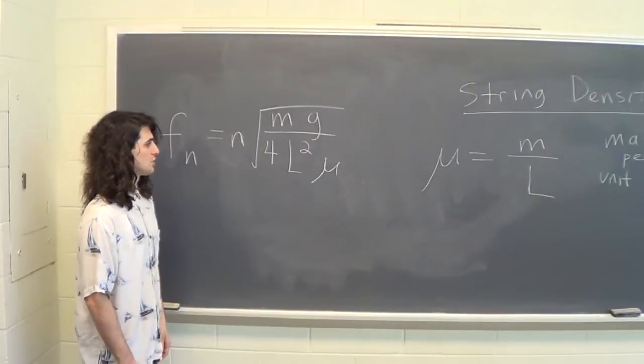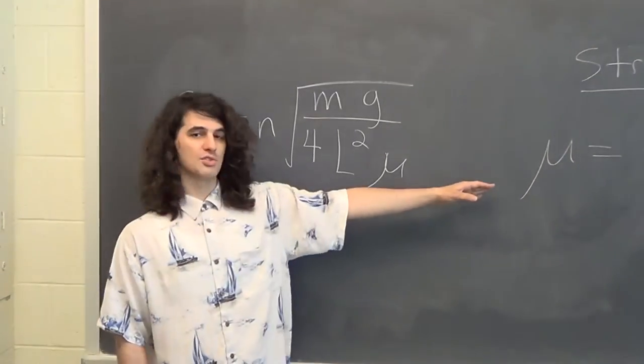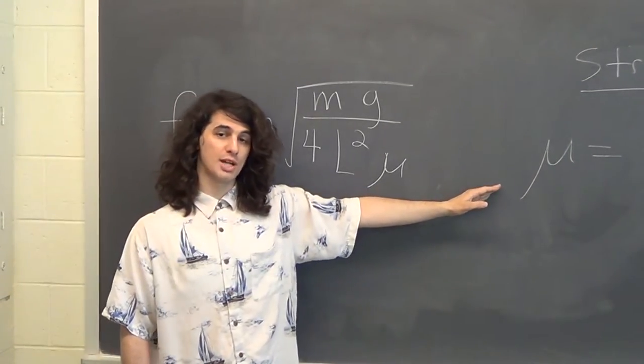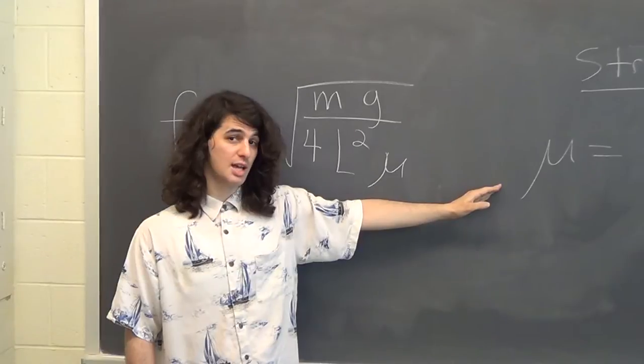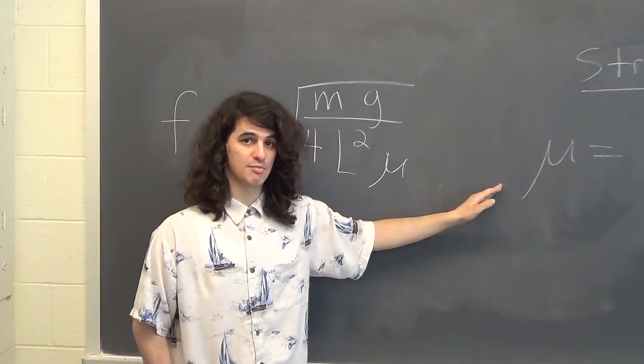As part of the actual experiment, we have two different ways of measuring density. In this case, you would bring the string up to the scale, the balance, and just simply weigh it, and then take its length of the amount of string you measure.